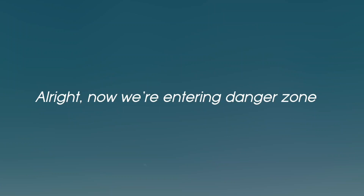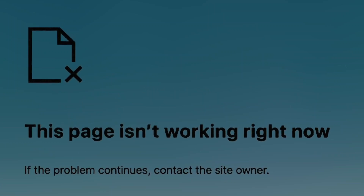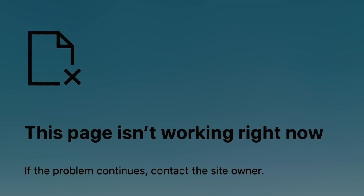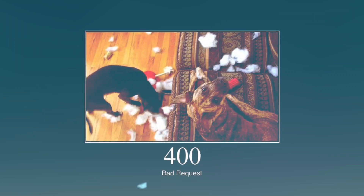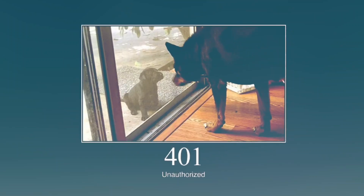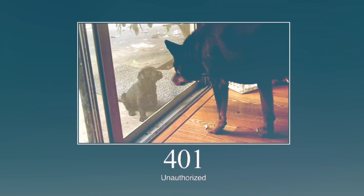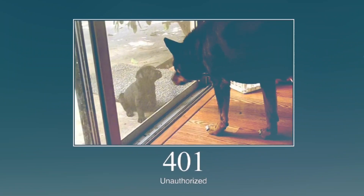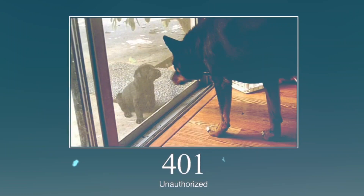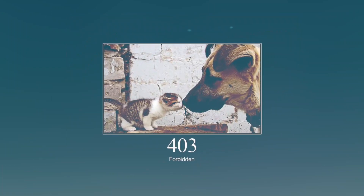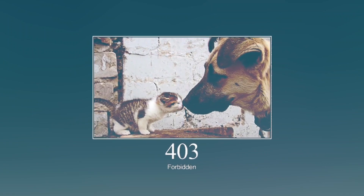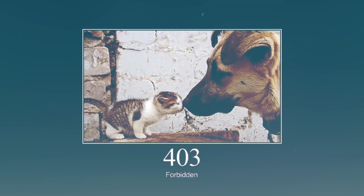Now we're entering the danger zone — 4xx errors. These are client-side mistakes, meaning something went wrong with your request. 400 Bad Request — this happens when the server can't understand your request. It's like giving someone instructions in the wrong language. 401 Unauthorized — you need to log in. The server's telling you it can see your request, but you're not logged in or don't have the right credentials. 403 Forbidden — you're logged in, but you don't have permission to access this resource. Think of it as a locked door — you can see it, but you can't open it.